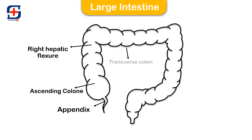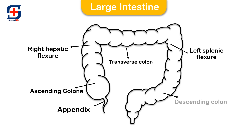The transverse colon is the longest and the most movable part of the colon. It crosses the abdomen from the ascending colon at the hepatic flexure. Also, this is the left splenic flexure. The descending colon is the part of the large intestine from the splenic flexure to the beginning of the sigmoid colon.